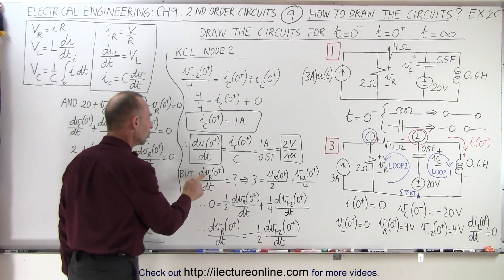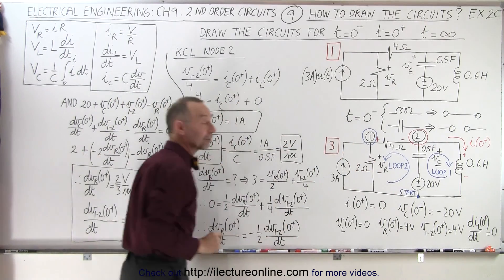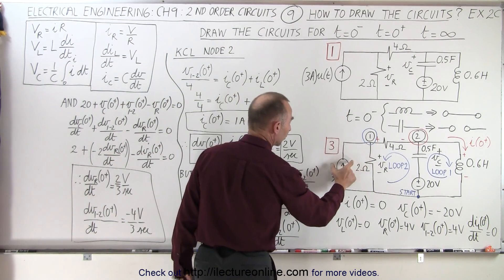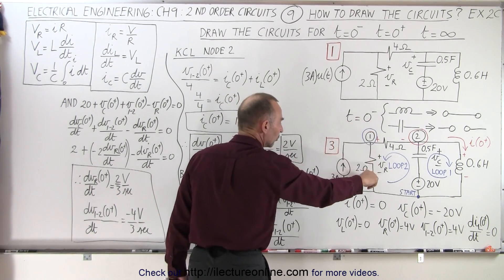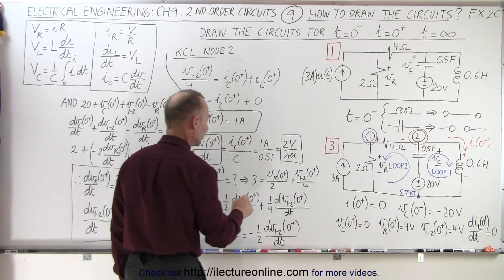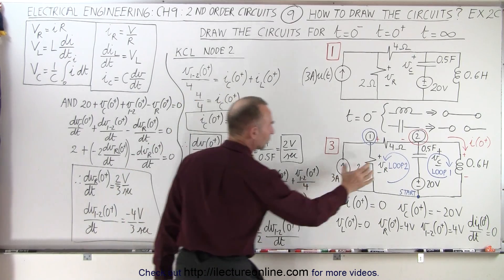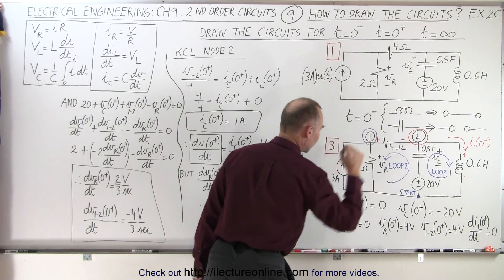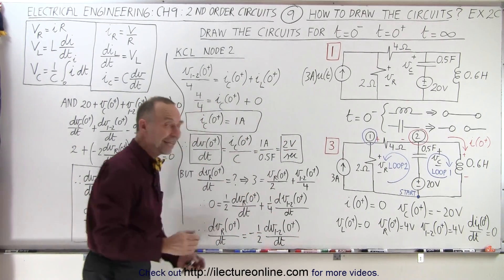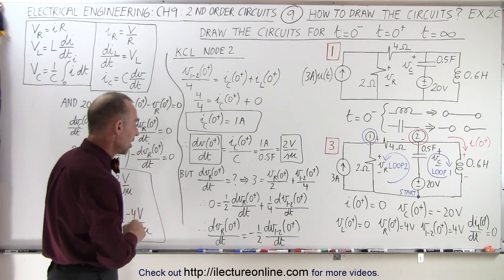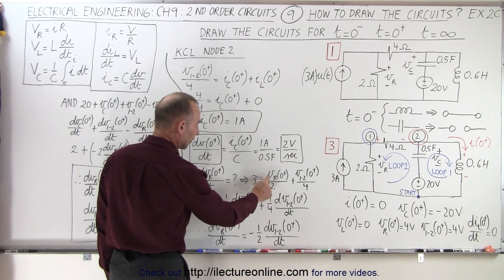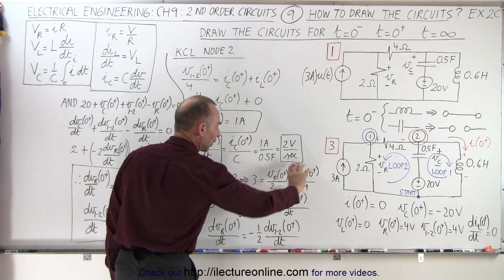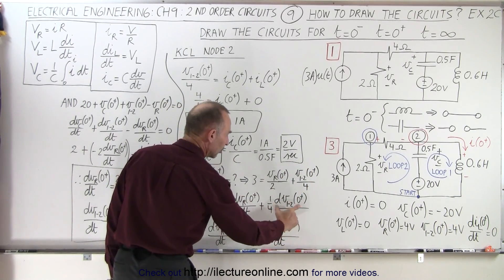Next we want to find the change in voltage across the resistor with respect to time. We start with the equation from before: the current entering node 1 from the source equals the current leaving through the 2 ohm resistor and through the 4 ohm resistor. So 3 equals Vr over 2, which is the voltage across the resistor divided by 2 ohms, plus the voltage between the two nodes divided by the resistance there. We then take the derivative of both sides with respect to time. The derivative of the constant is 0, giving us dVr/dt and dV/dt between the two nodes.